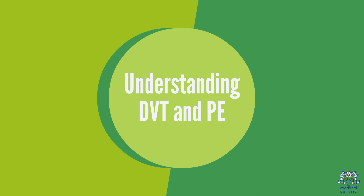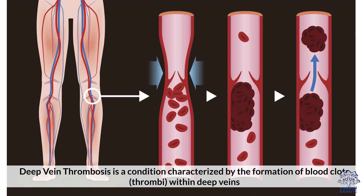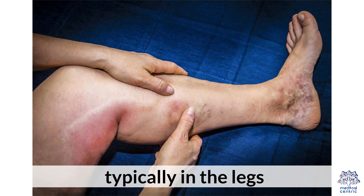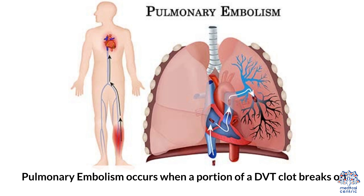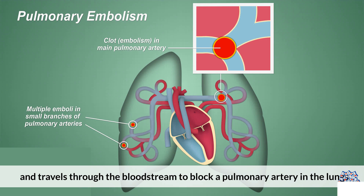1. Understanding DVT and PE. DVT, Deep Vein Thrombosis, is a condition characterized by the formation of blood clots, or thrombi, within deep veins, typically in the legs. PE, Pulmonary Embolism, occurs when a portion of a DVT clot breaks off and travels through the bloodstream to block a pulmonary artery in the lungs.